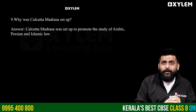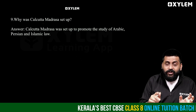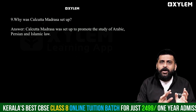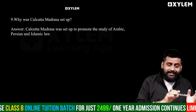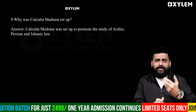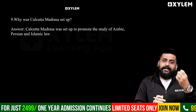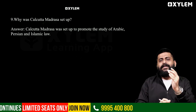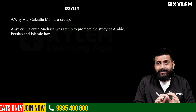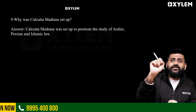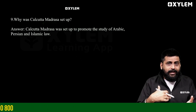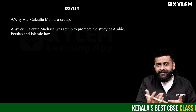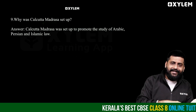The next question: why was the Calcutta Madrasa set up? The Calcutta Madrasa was set up to promote the study of Arabic, Persian, and Islamic law. It was also connected to promoting the study of Hindu, Greek, and other classical languages under the orientalist approach.